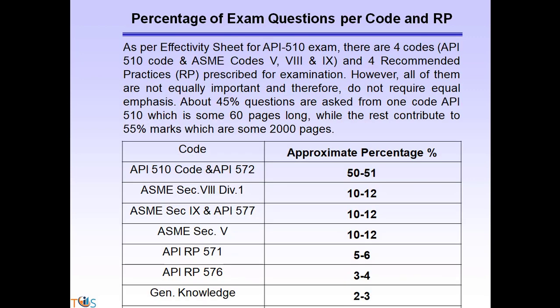Let's look at the percentage of exam questions per code and recommended practice as per the effectivity sheet for API 510. There are four codes — API 510, and ASME Codes 5, 8, and 9 — plus four recommended practices prescribed for examination. About 45 percent of questions come from API 510 alone, which is only 60 pages long, while the rest contribute to 55 percent from about 2,000 pages. API 510 and API 572 together constitute around 50 percent of questions, and ASME Section 8 Division 1 is around 10 to 12 percent.